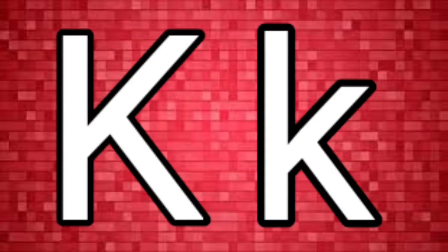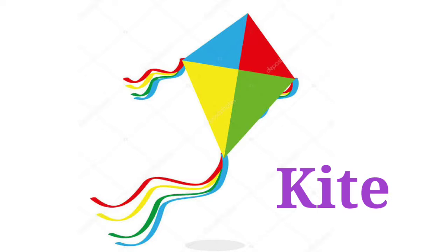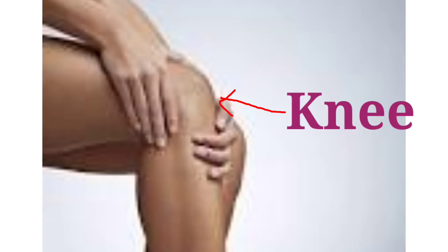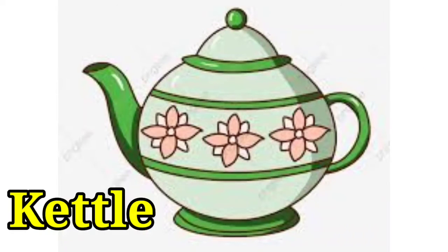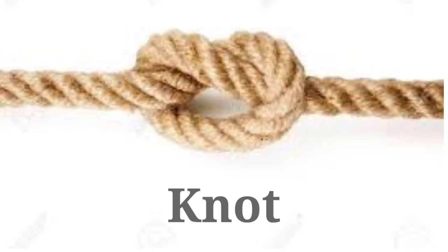This is capital K, this is small k. In this video we will learn words which will start with letter K. K for kite, K for kitten, K for knee, K for kilogram, K for kettle, K for knot.